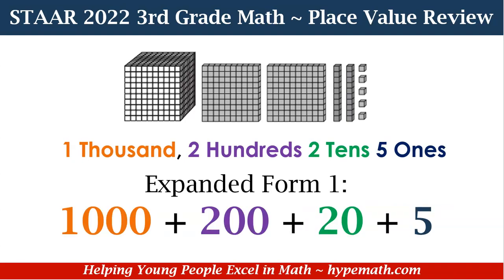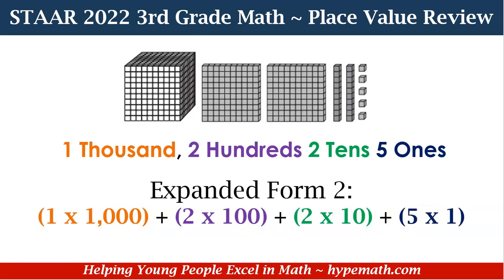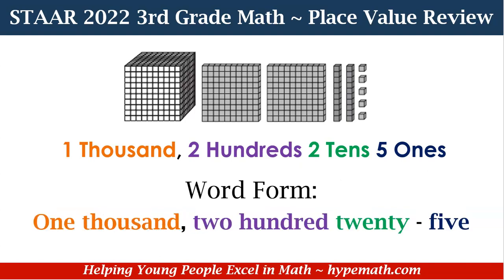In expanded form, one type is 1,000 plus 200 plus 20 plus 5. And if you notice, it's color coded so that you can follow along. Let's look at another way we can write a number in expanded form: one times 1,000 plus two times 100 plus two times 10 plus five times one. In word form, we're writing all of the numbers in words. We have 1,225.